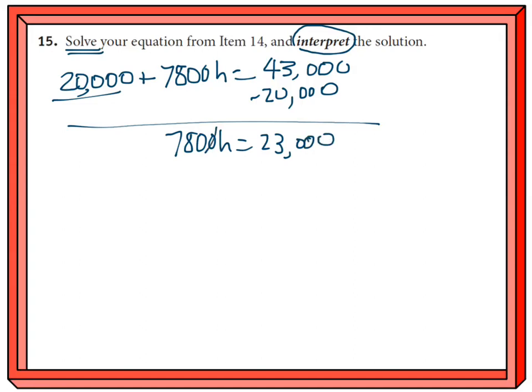And let's just make this a little bit easier here and cross off some zeros. So basically I just divided both sides by 100. So I have 780H is equal to 230, and divide by 78, H is equal to 230 over 78. And I'm just going to punch that into the calculator.